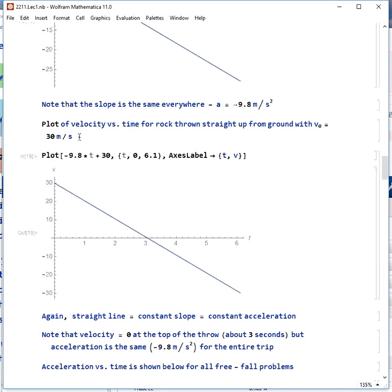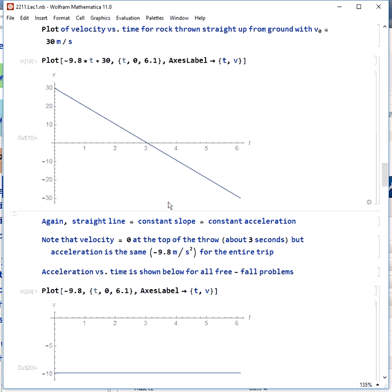If we instead look at the plot of velocity versus time for throwing a rock straight up with a speed of 30 meters per second initially, we get this line. Notice it has the same slope as before because we still have the same acceleration as before, negative 9.8 meters per second squared, the entire time, beginning at the top where velocity is zero and at the end. This straight line means a constant slope or a constant acceleration.